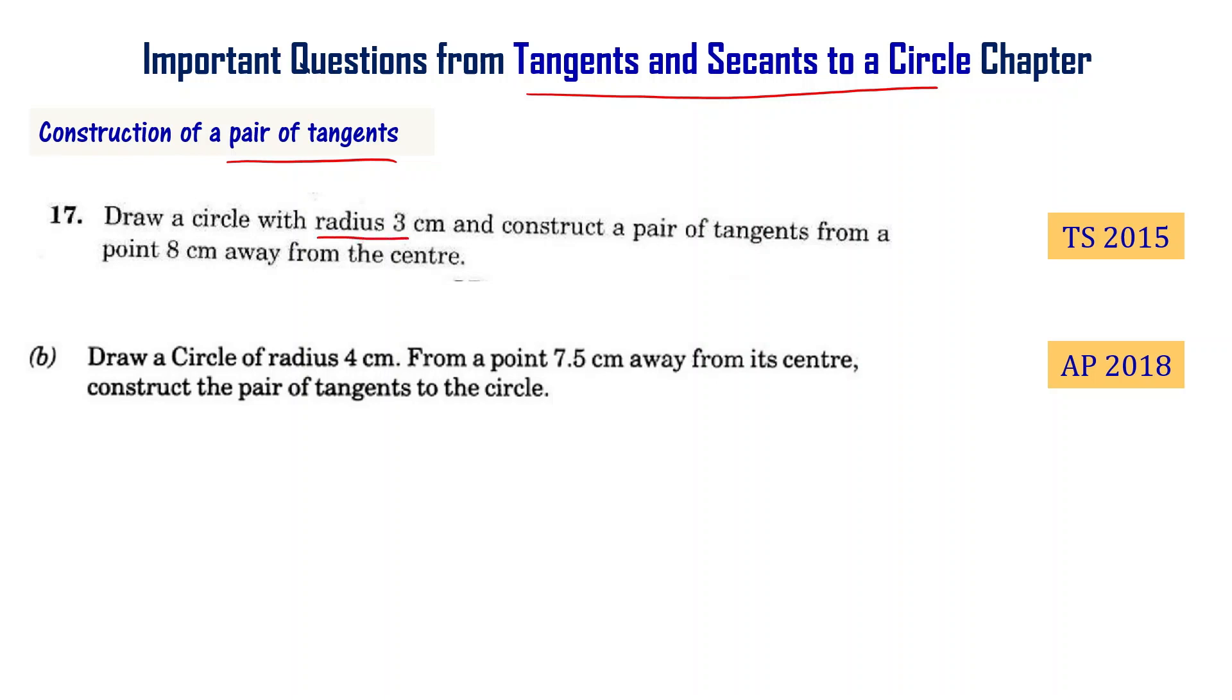Draw a circle with radius 3 cm and construct a pair of tangents from a point 8 cm away from the center. This is Telangana final exam 2015 question.